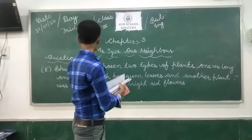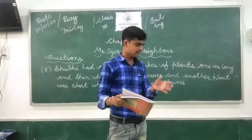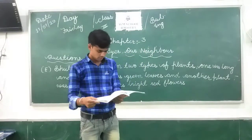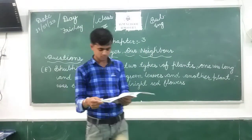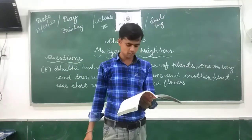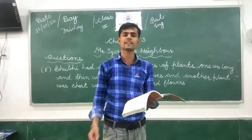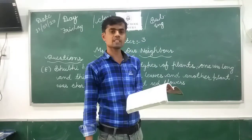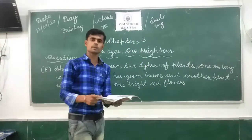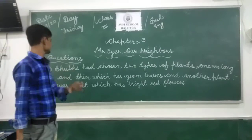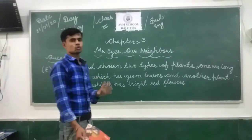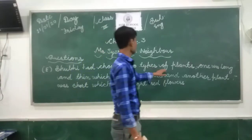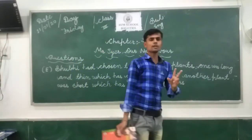Now coming to question number E. The question is: which plants did Soobie select for the terrarium? Terrarium के लिए कौन से plants Soobie ने select किए थे? Soobie ने two types of plants select किए थे।